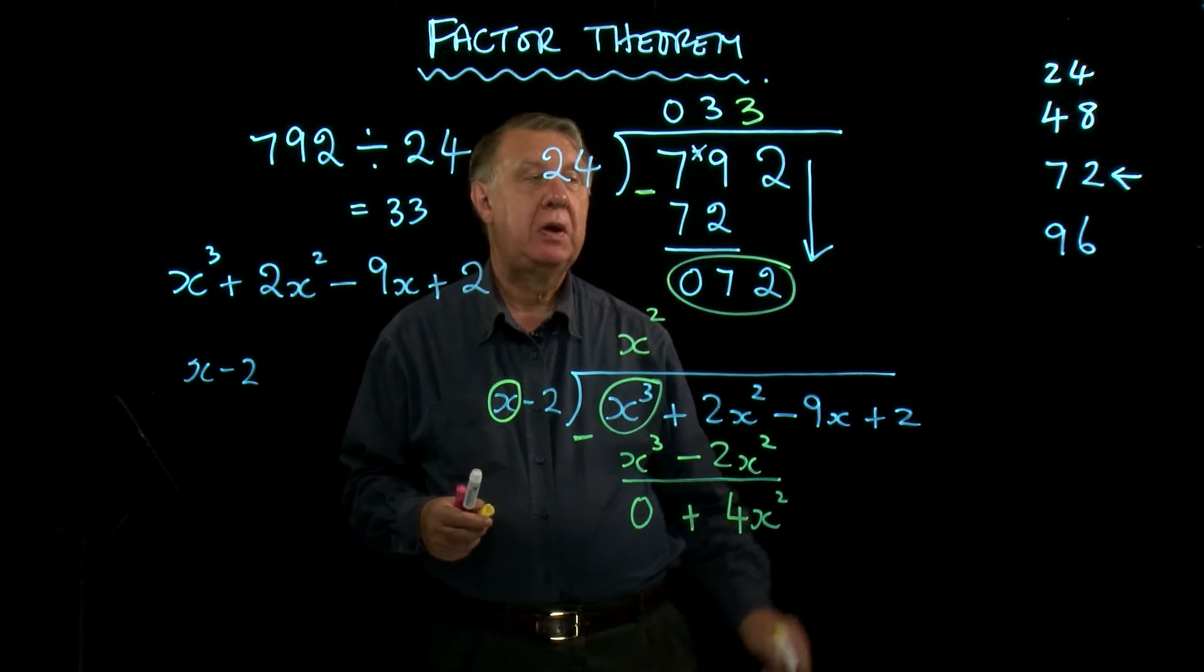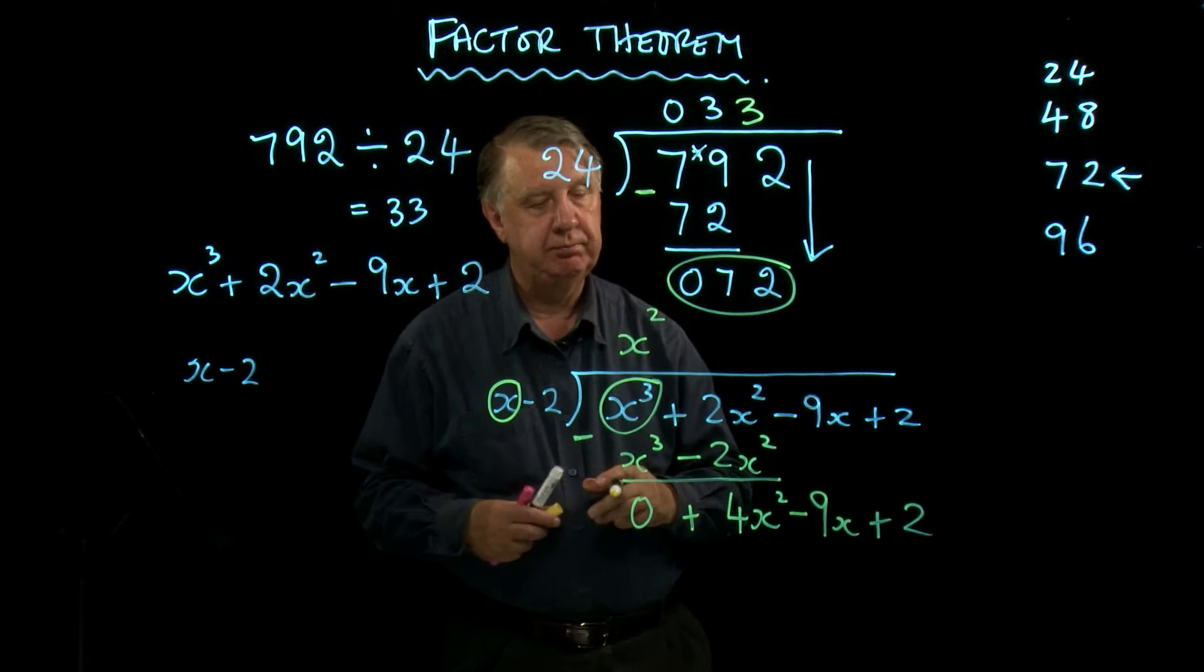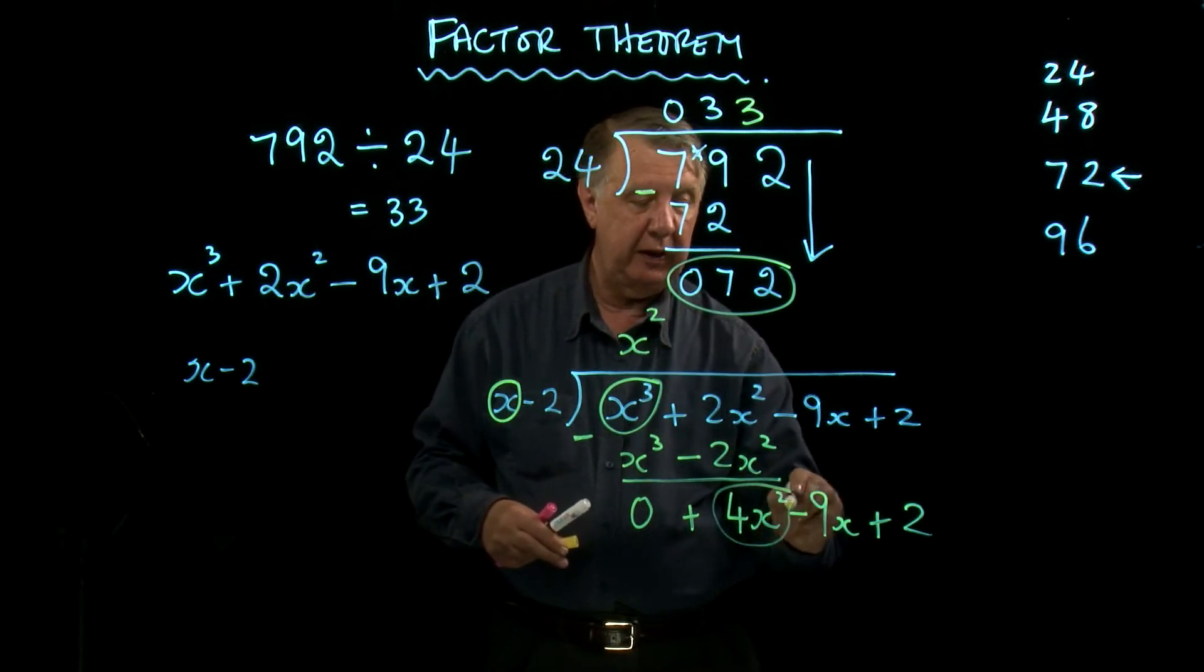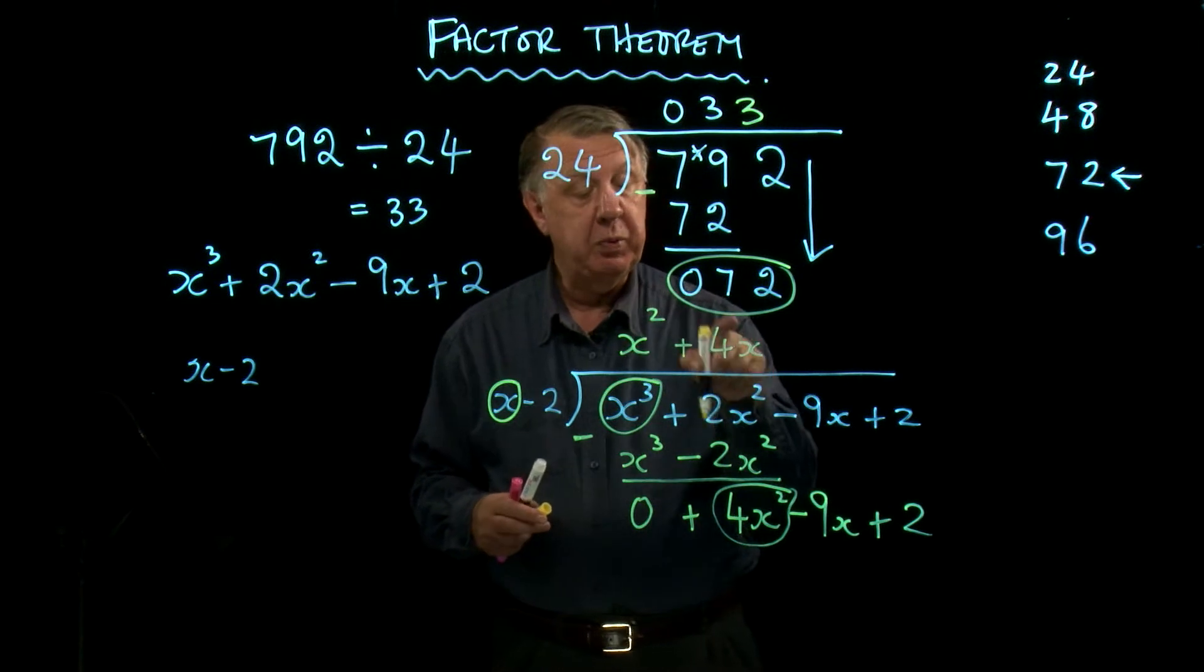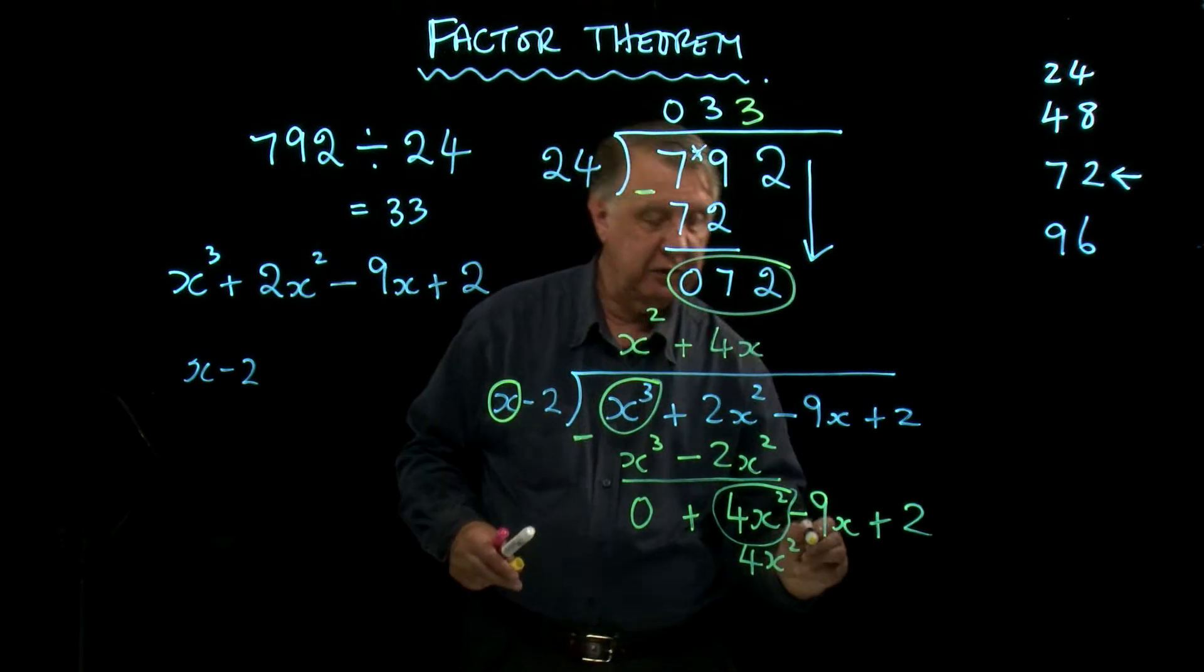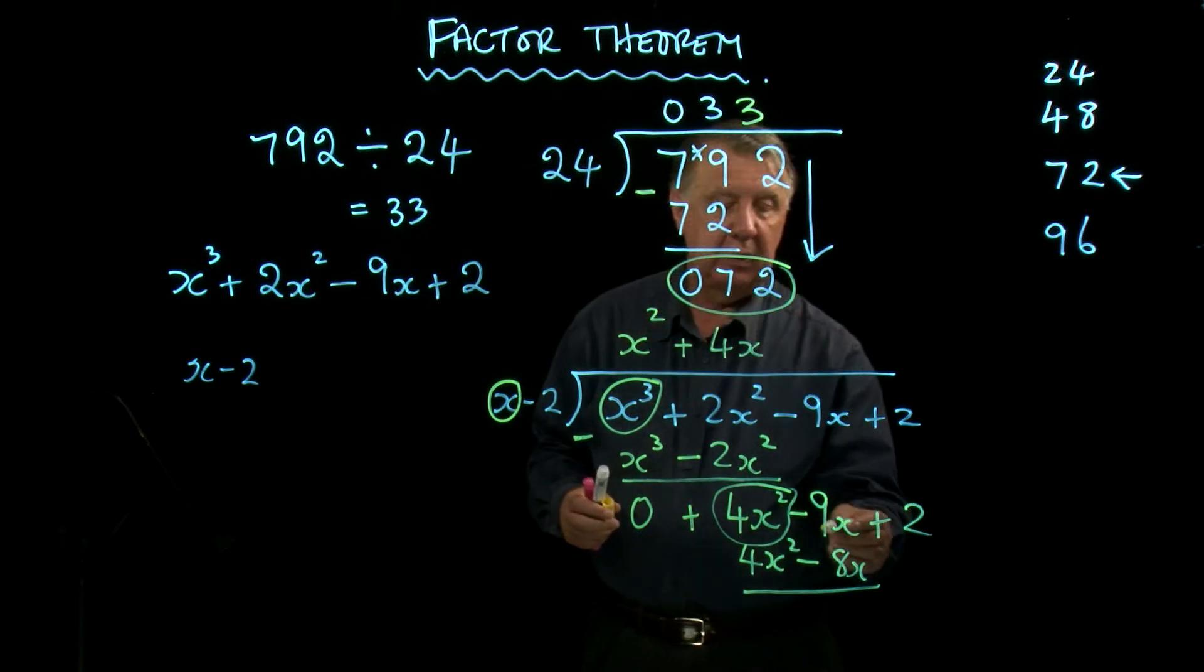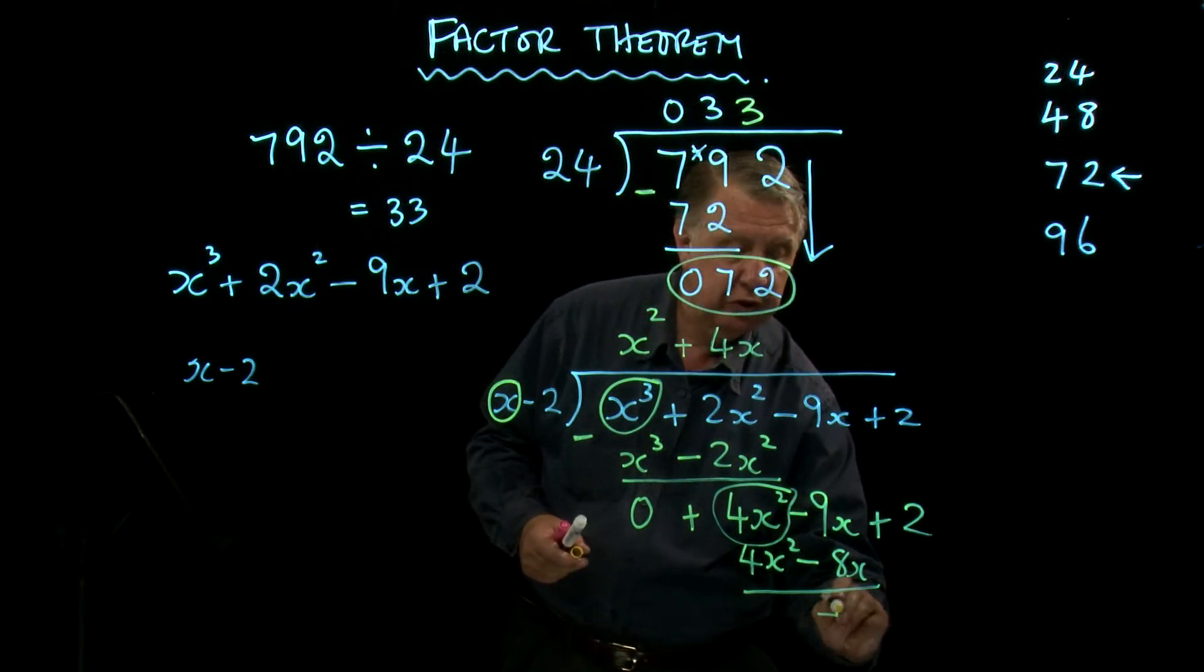What did I do next? I looked at anything that was left here and I slid it down. So I put anything left there and bring it down. Start again. I'm now working at this level. So it's no longer x into x³, but it's now x into 4x², which goes 4x. Because if I multiply 4x by x, I get 4x². 4x times -2 is -8x. Subtract. Careful again. -9x take away -8x is -9x add 8x, which is -x.